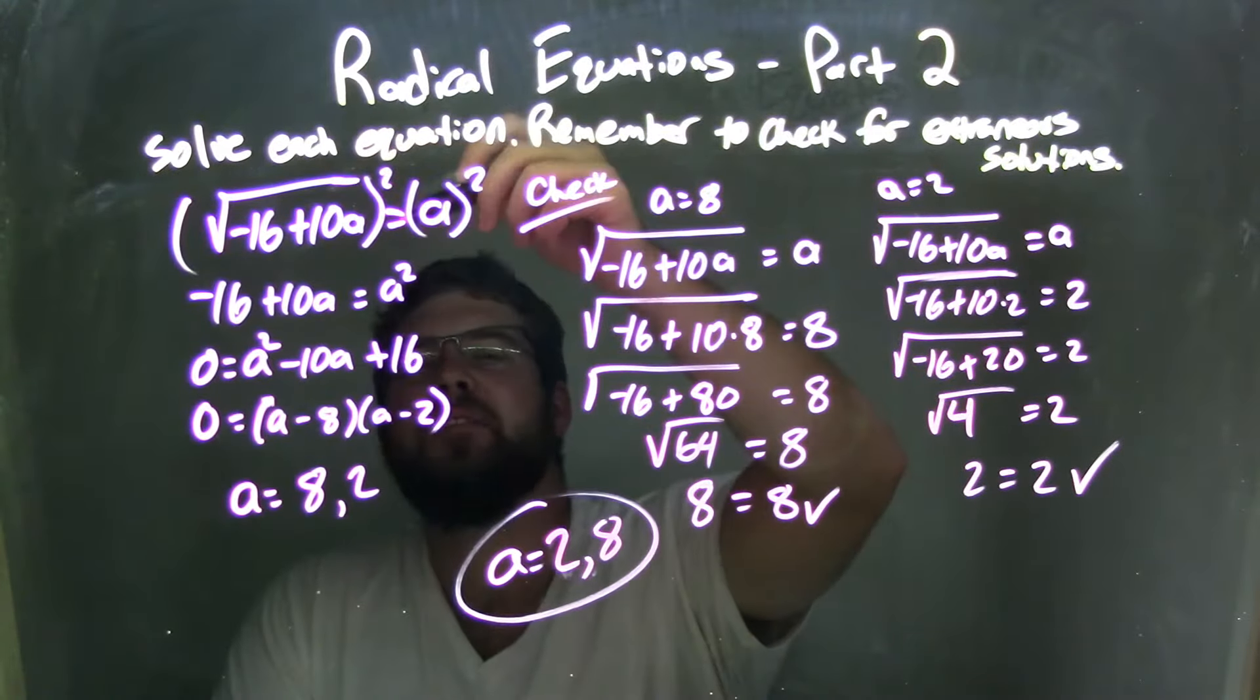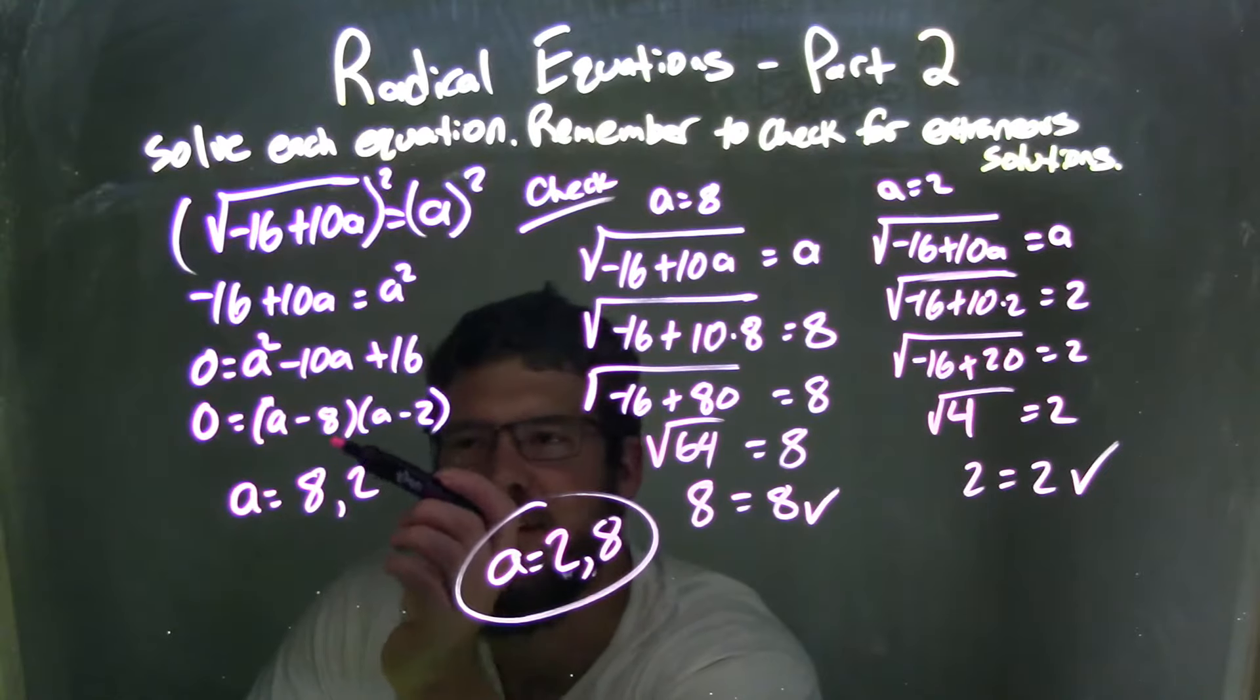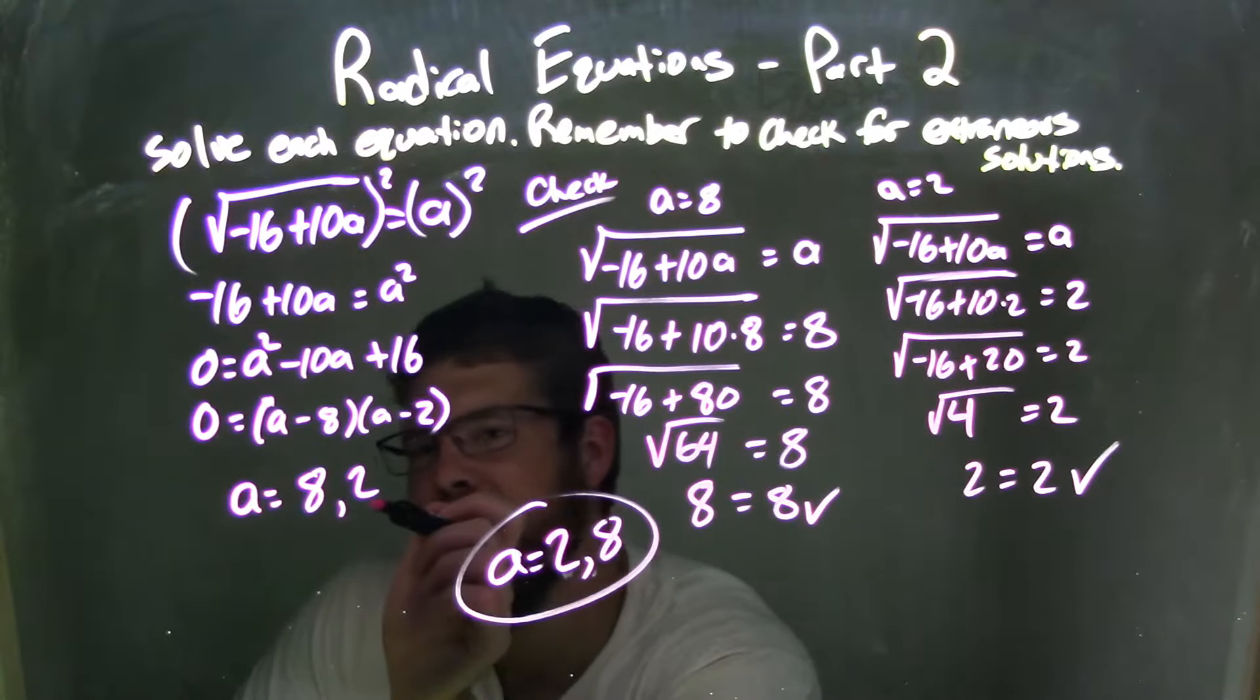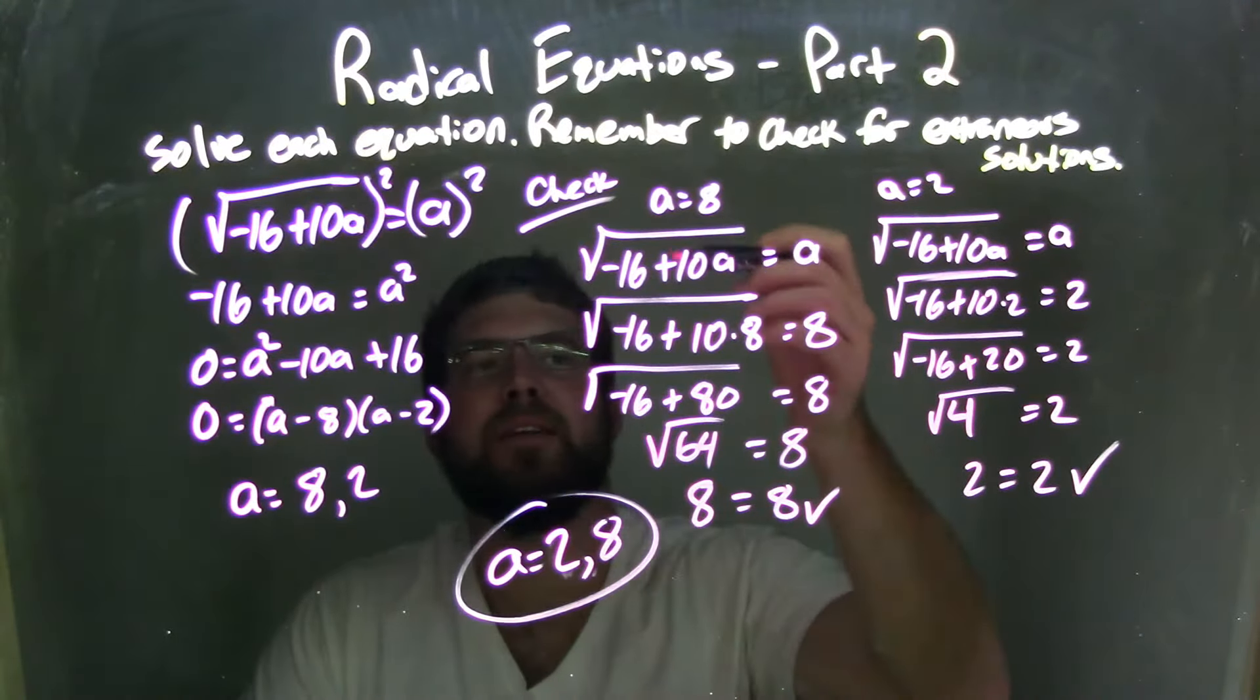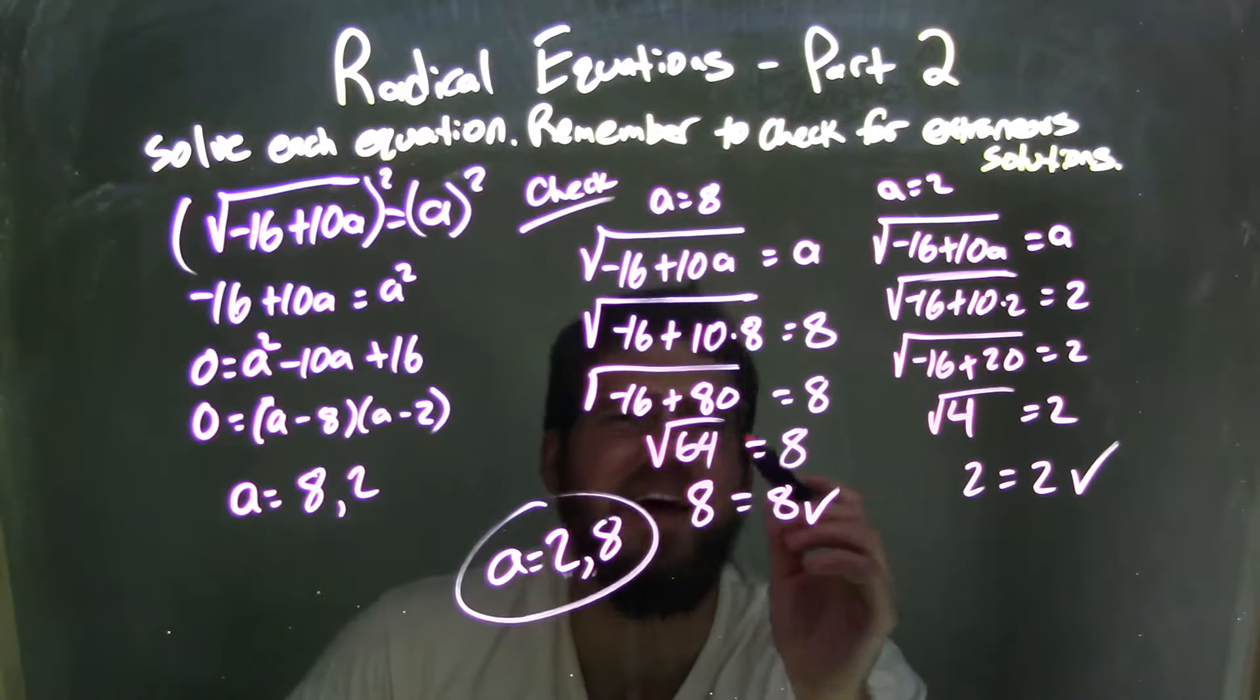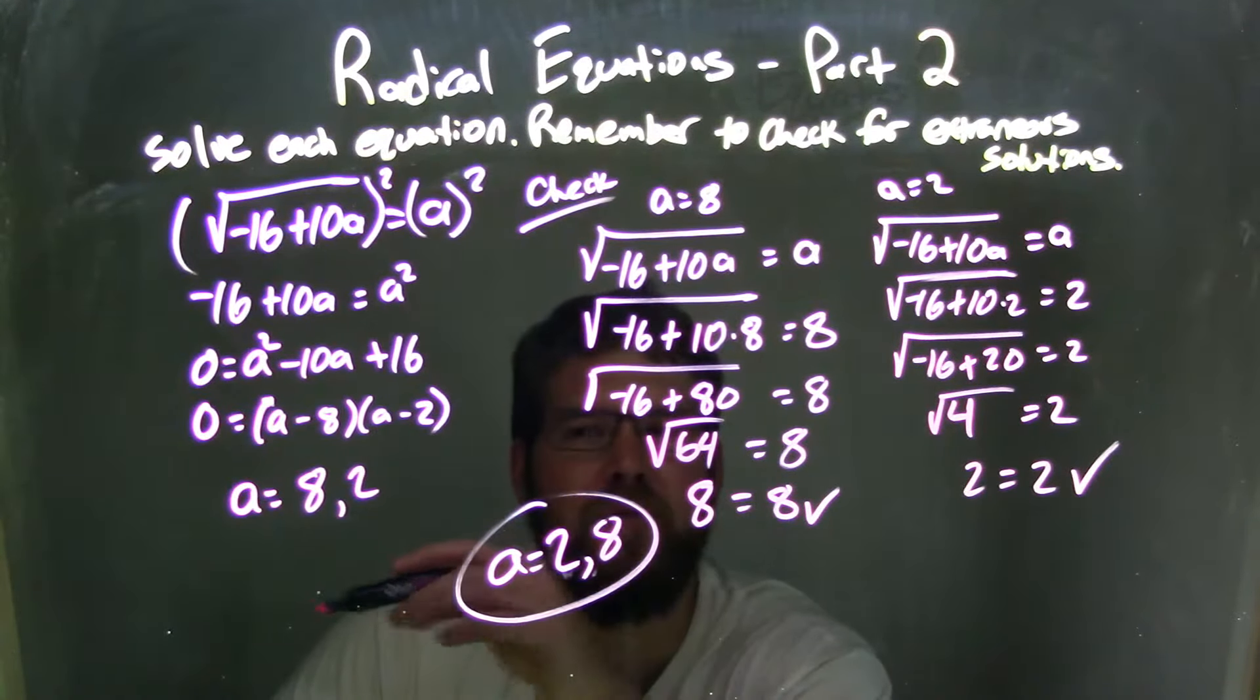So let's recap. We were given our equation. We squared both sides to get rid of the radical, brought everything to one side to have a quadratic, and we factored it. After we factored it, we set both parts equal to 0, and we got a equals 8 and a equals 2 as our two possible solutions. We had to check that. Plugged 8 in, simplified. As we simplified it, left and right hand sides are equal, both being 8. So confirmed that a equals 8 is a true solution.